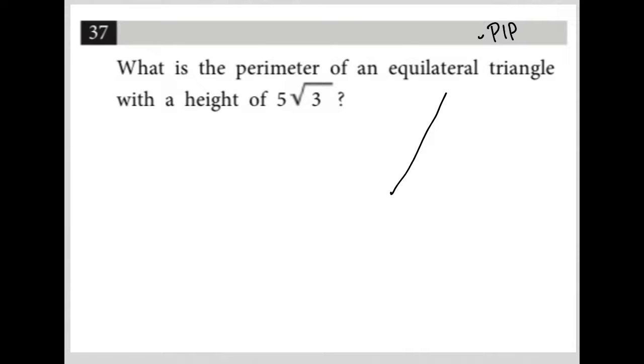So I'm going to draw my equilateral triangle. What do I know about equilateral triangles? They're equilateral - every side is equal. But also they're equiangular. Every angle is 60 degrees.